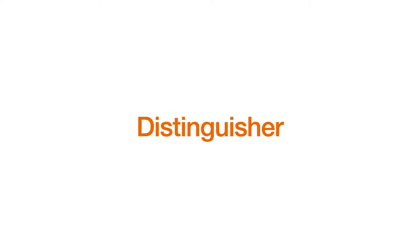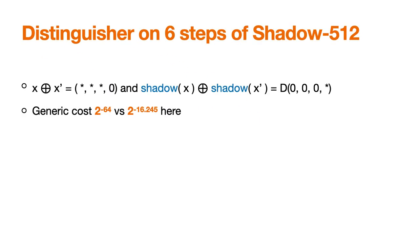Now I'll talk about our distinguisher. For Shadow 512, we can exhibit pairs of states x, x prime with a zero difference in the last bundle, such that the states after encryption are equal on the first three bundles after inverting D. Generating such pairs for a random permutation would require about 2 to the power of 64 queries. In our case, we only need 2 to the power of 16 calls to the permutation. This distinguisher is based on two properties: a probability-one truncated differential, and the propagation of three identical states.